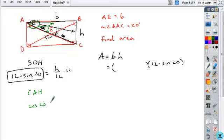Cosine. So here, the cosine of 20 is equal to B over 12, multiply by 12. And here's our value we can substitute in for B. So 12 times the cosine of 20 degrees.